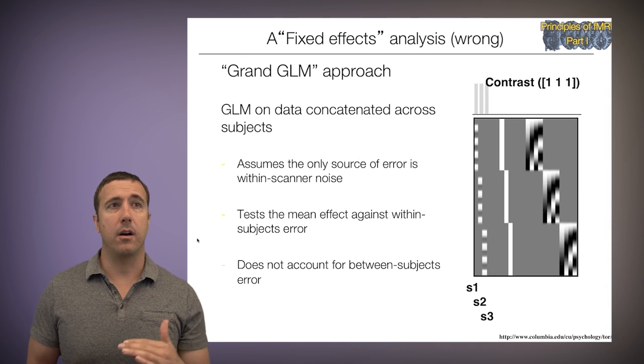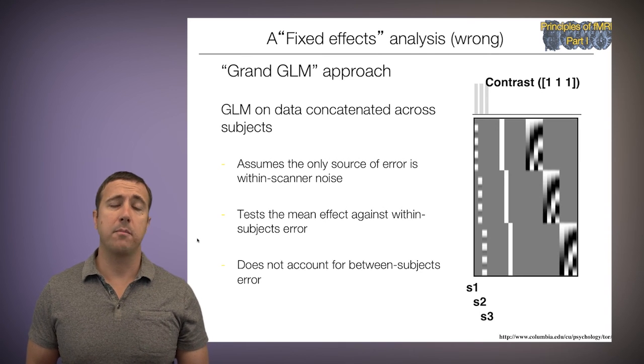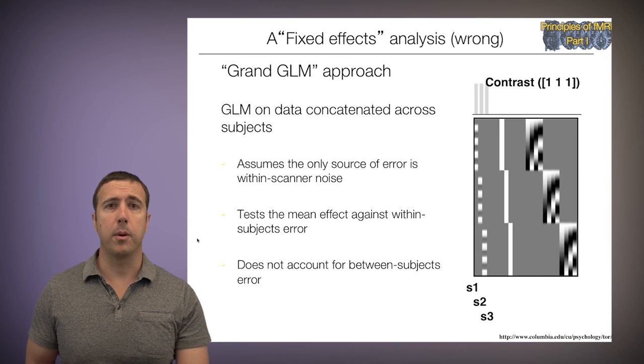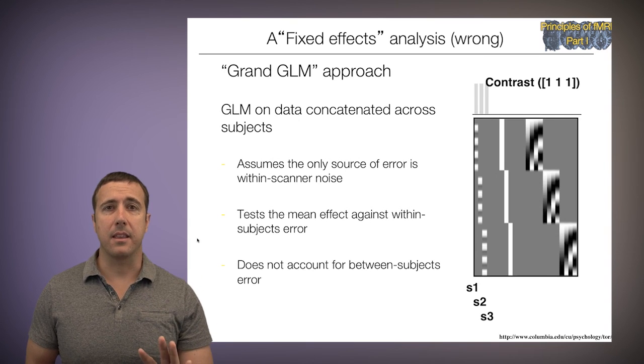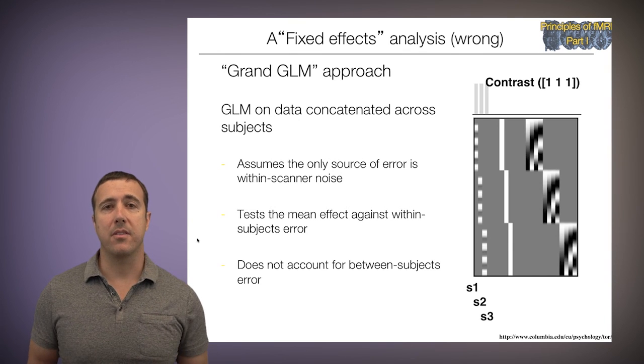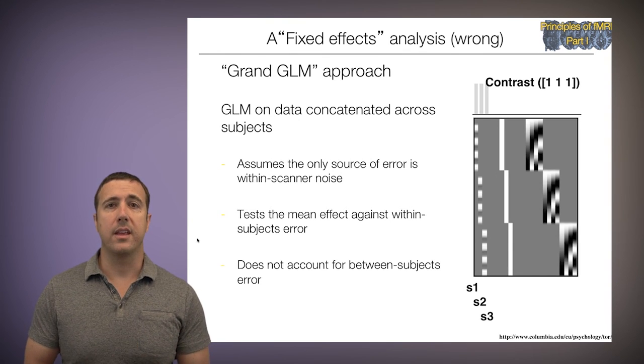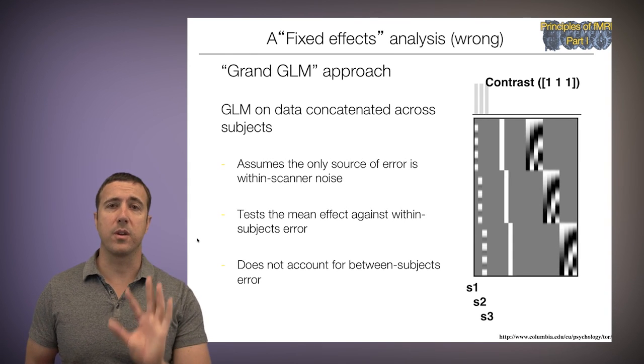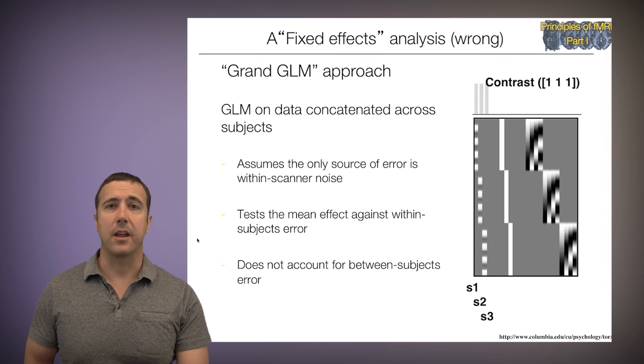So I'm making a number of assumptions here. So every subject gets their own slope, but when I calculate the error in that model, I'm going to average the subjects and I'm going to compare that to the error within subject, the error on the time series only. So this assumes that the only source of error is within-person scanner noise. And that's not accurate.